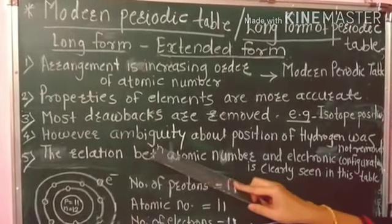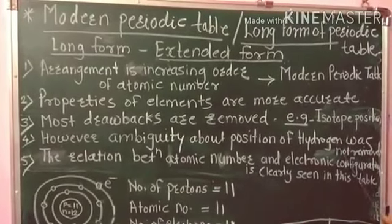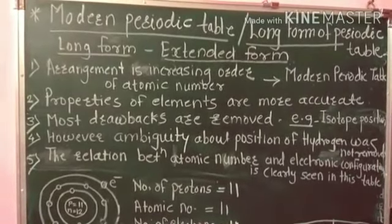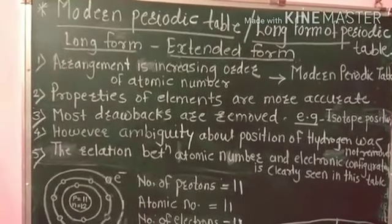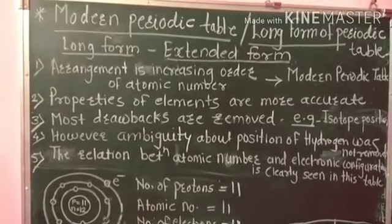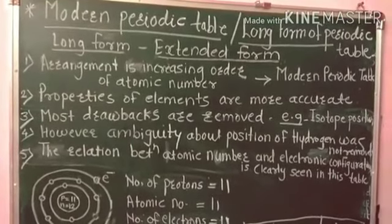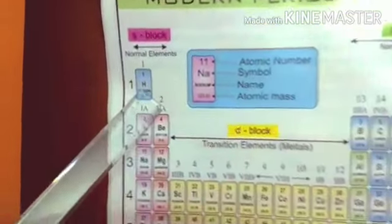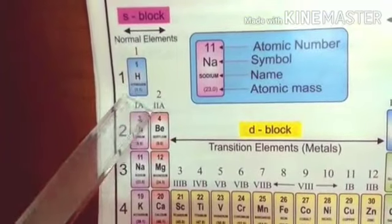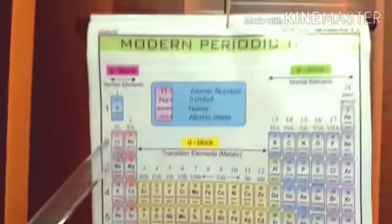Ambiguity means 'not clear.' The reason behind this is that hydrogen shows resemblance with the alkali metals. In the modern periodic table, hydrogen is placed separately.